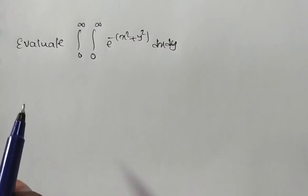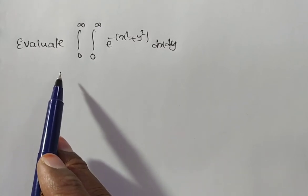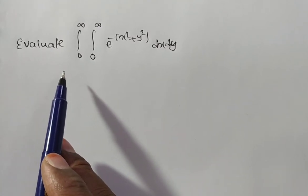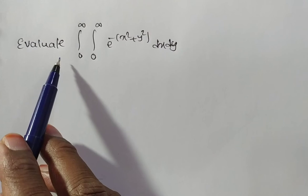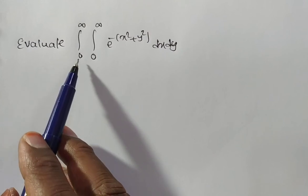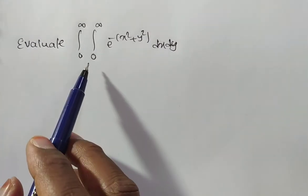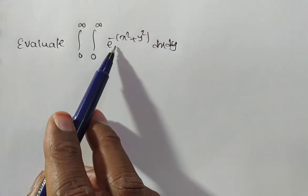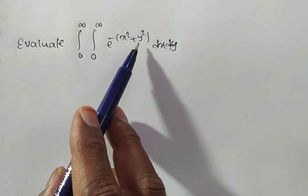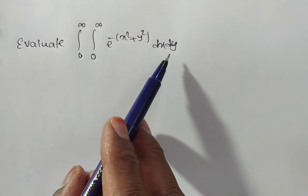Hi friends, now we are solving a problem on double integrals. The given problem is: evaluate the integral from 0 to infinity, integral from 0 to infinity, of e to the power of minus of x square plus y square, dx dy.